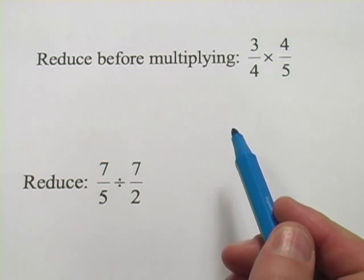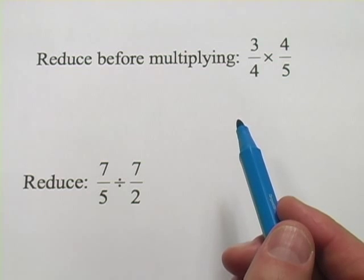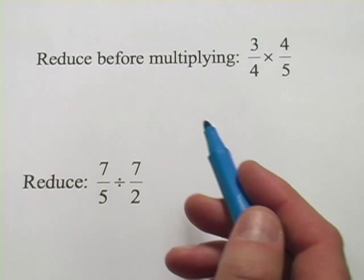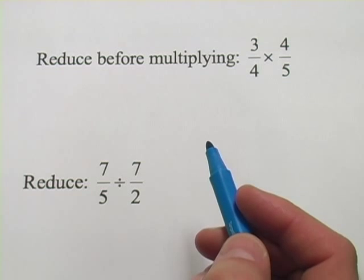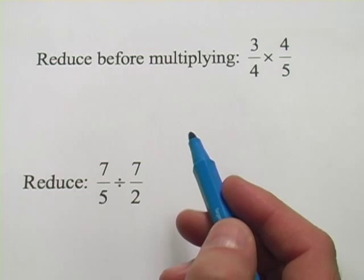In these problems, we're working on reducing fractions before we multiply them. And this is a big work saver. Whenever you can reduce a fraction before you multiply it, it's going to be a lot less work.